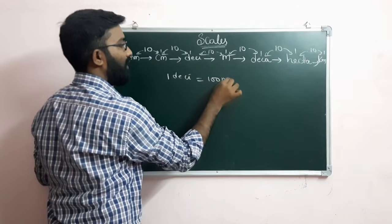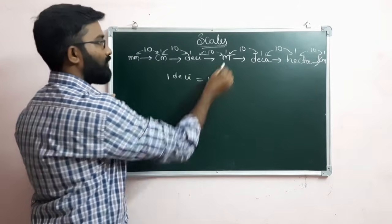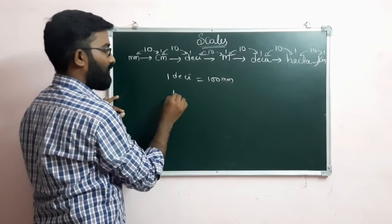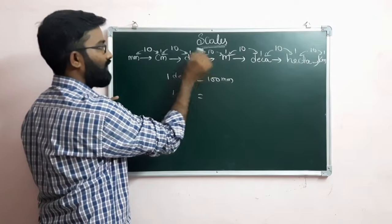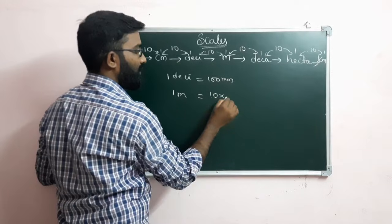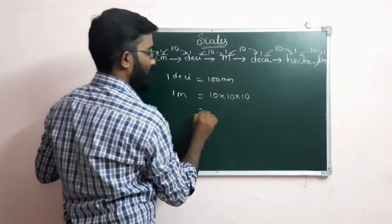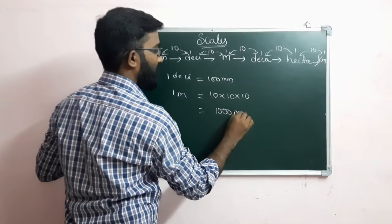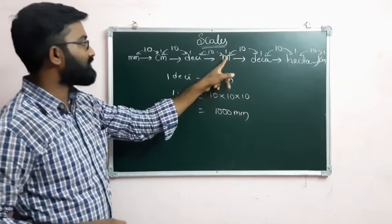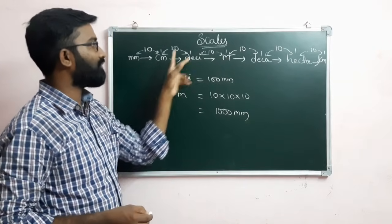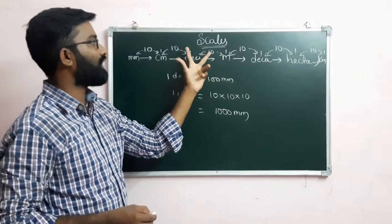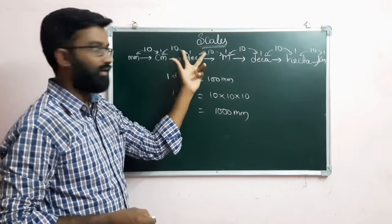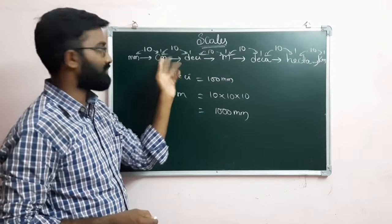So 10 into 10 gives 100 mm. For meter conversions: 1 meter equals 10 into 10 into 10 which is 1000 mm. Meter to centimeter is 10 into 10 which is 100. So 1 meter equals 100 cm.